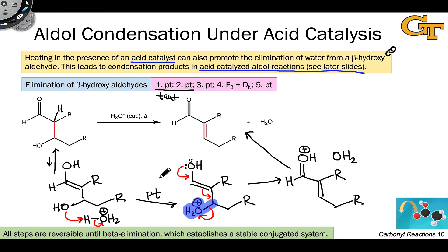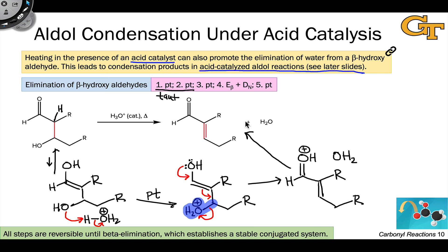This condensation under acidic conditions is a little more involved, but the key step again is the elimination of water from an intermediate involving a nucleophilic derivative of the carbonyl group — either an enolate under basic conditions or an enol under acidic conditions. This process is essentially impossible to stop at the beta-hydroxy ketone or aldehyde stage, so acid-catalyzed aldol reactions go all the way through the condensation to the unsaturated carbonyl compound product.